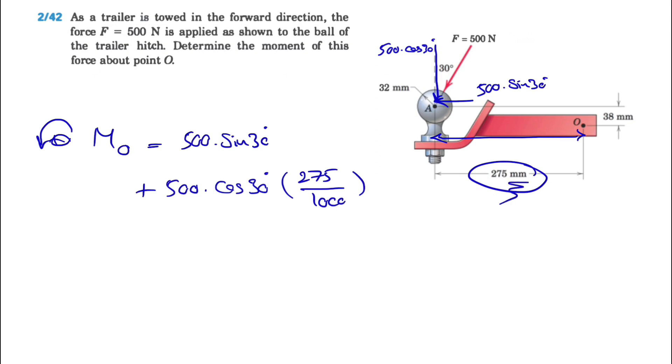For the previous one, the vertical distance that we're looking for from point O to A is what we have here, which we know is 38 millimeters divided by 1000 again to get it in meters.